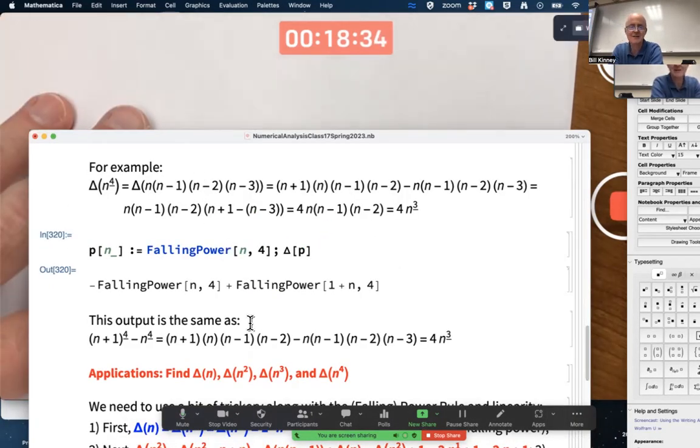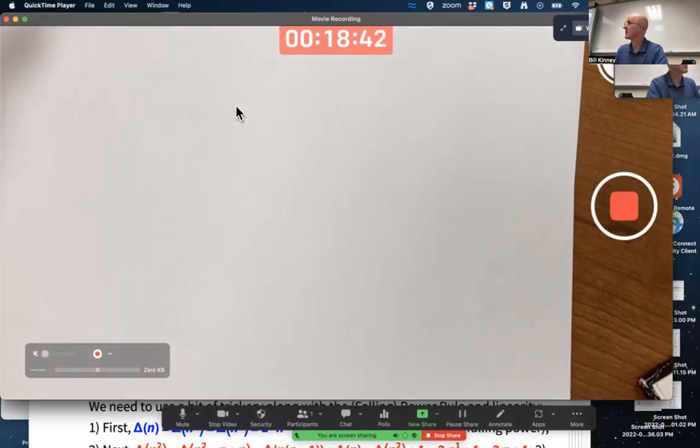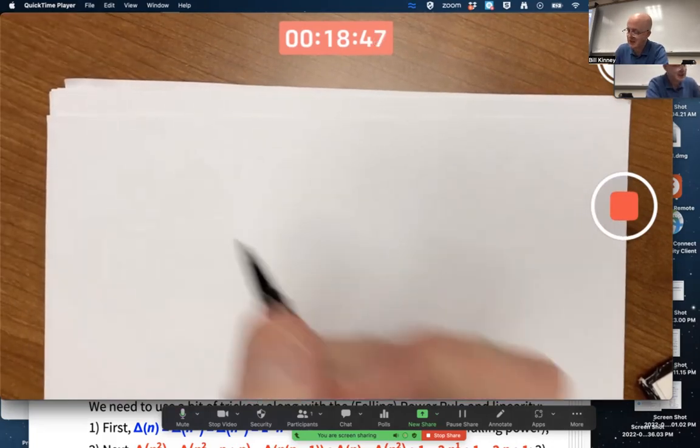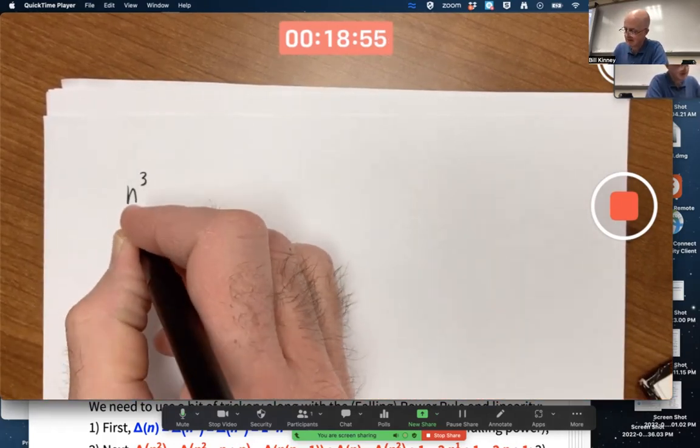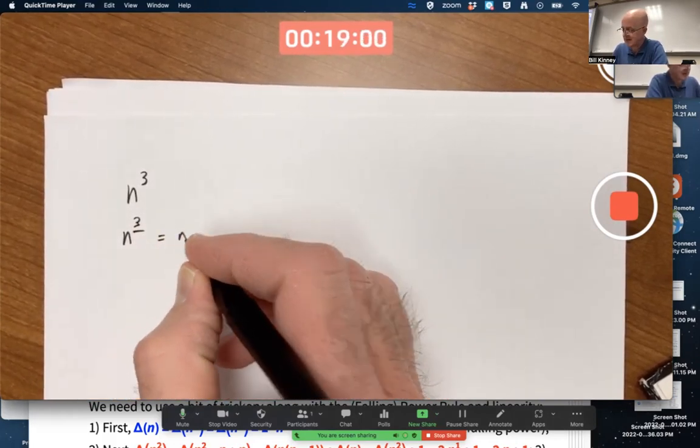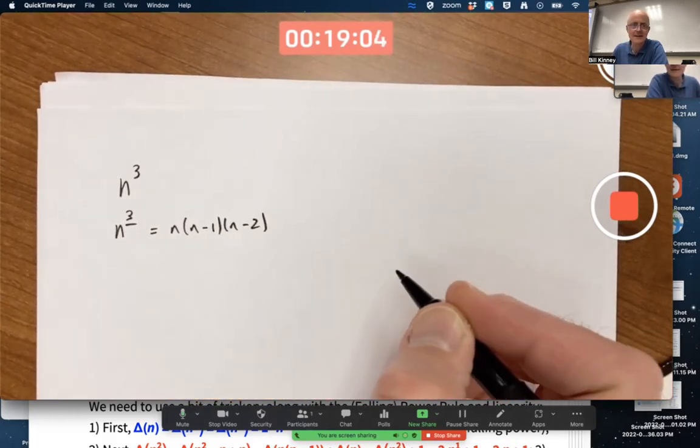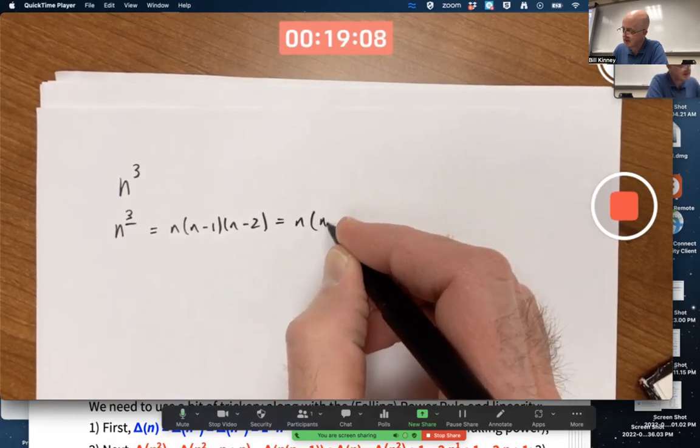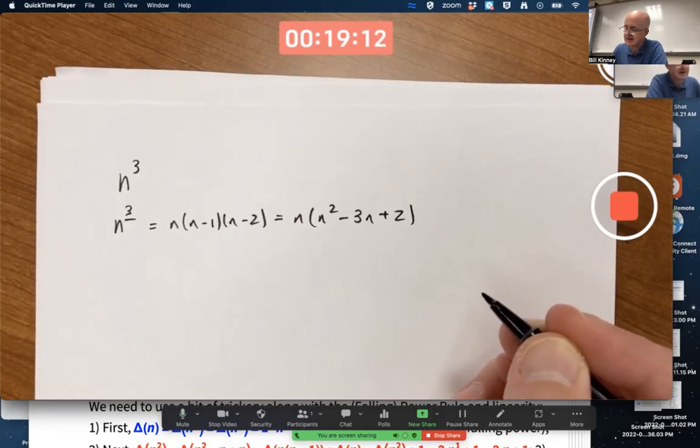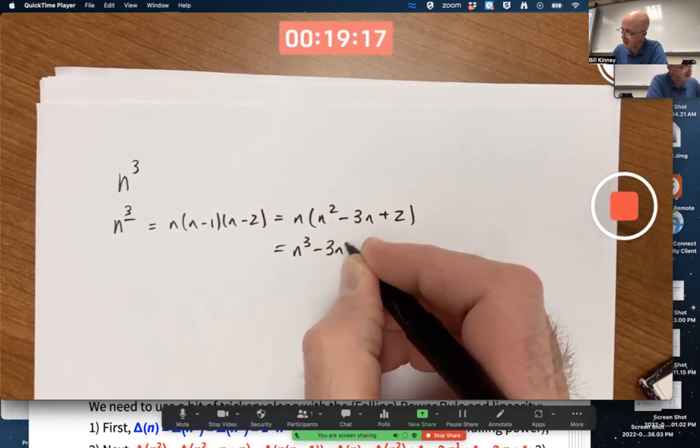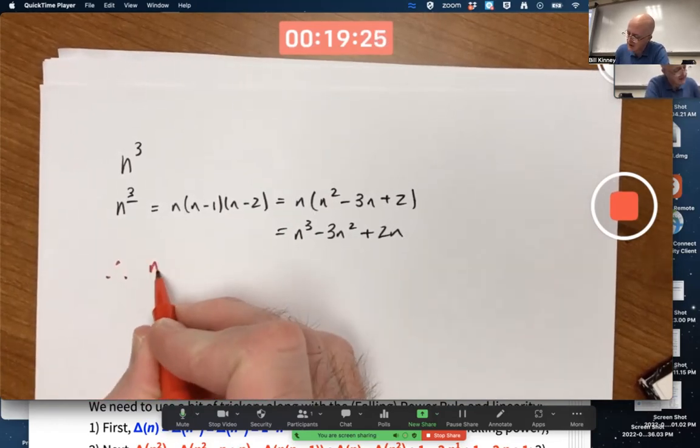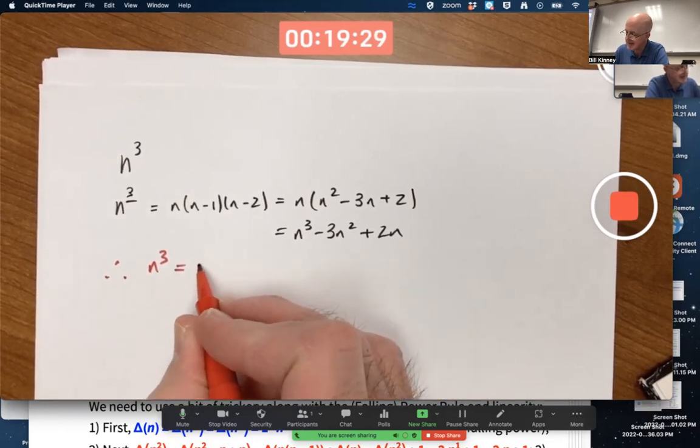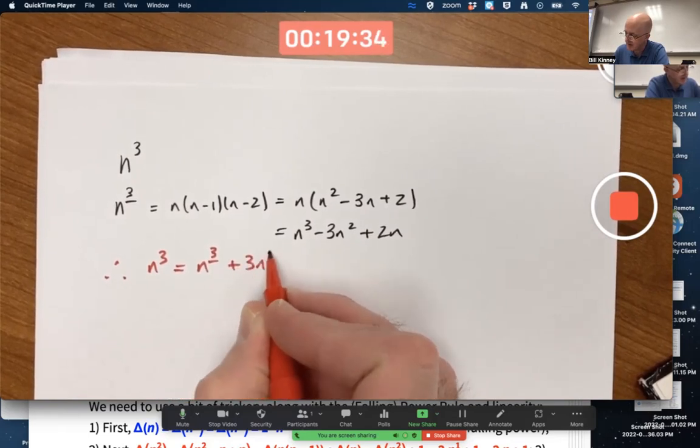You can use the falling power fact to find, for example, the discrete derivative of N cubed in a different way. How? A little bit of trickery. N cubed is not a falling power. But you can relate it to a falling power. How? Well, let's compute N to the third falling power. That would be N times (N-1) times (N-2). Expand that out. That'll be N times, in parentheses, N^2 minus 3N plus 2. And because of that, therefore, N^3, you can solve this equation for N^3 and write it as N to the third falling power plus 3N^2 minus 2N. Just take this equation and solve for N^3.